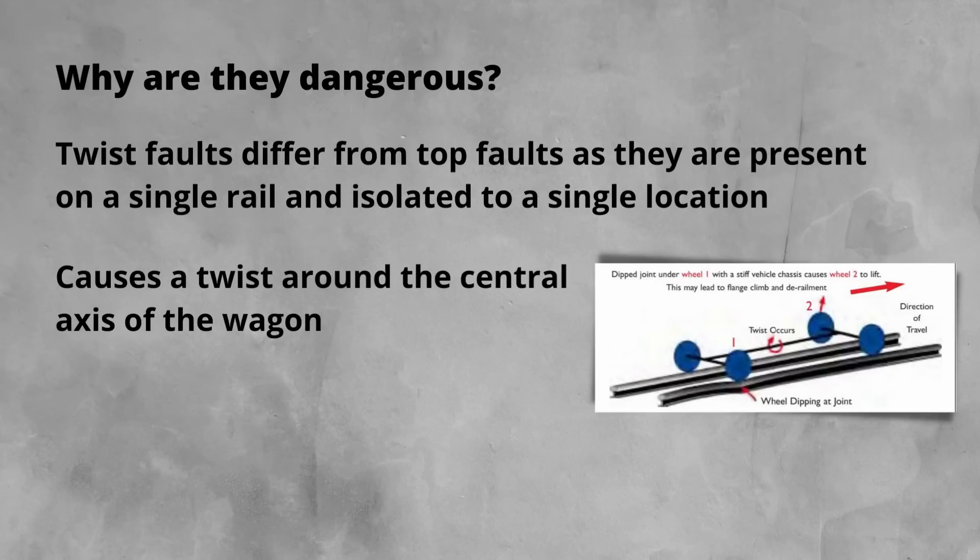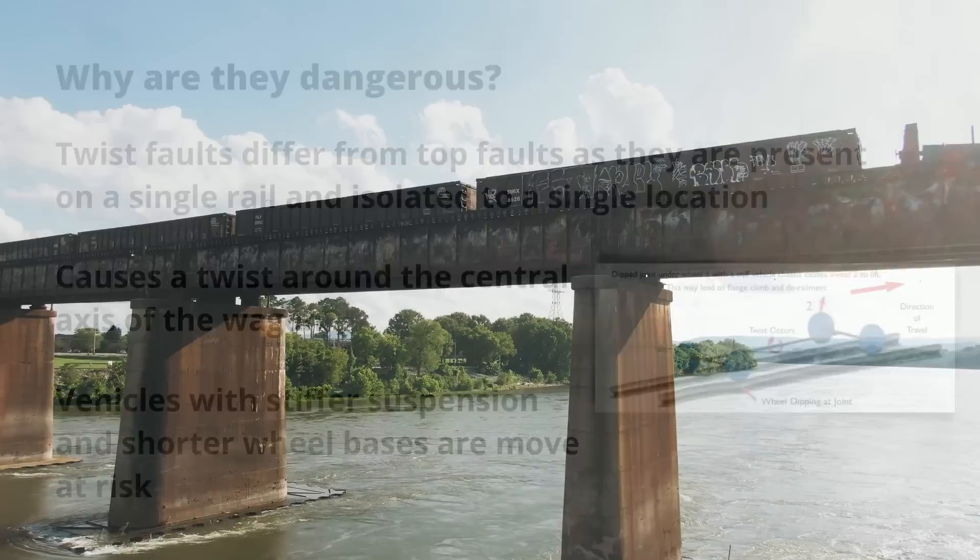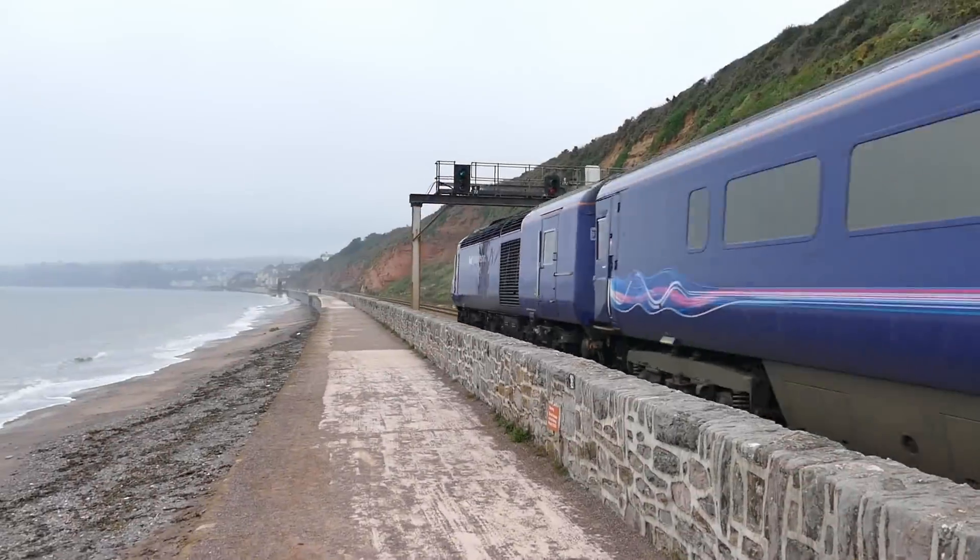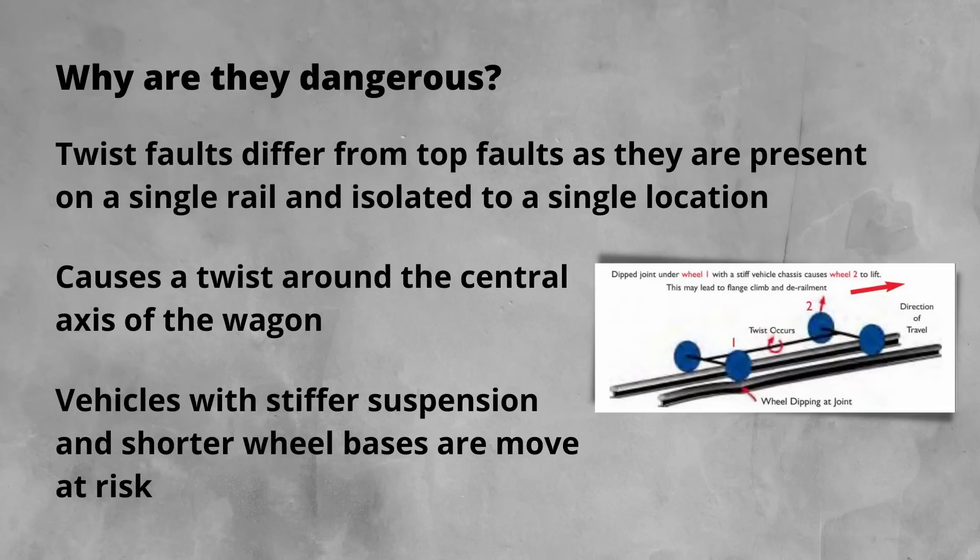Certain types of train vehicle are more susceptible to twist faults than others. Key to this is the suspension and vehicle length. Vehicles with stiffer suspension and shorter wheelbases are at a greater risk. These vehicles are freight wagons, particularly older types and designs. Passenger vehicles are longer and have softer suspension to enhance passenger comfort, therefore less of a risk.